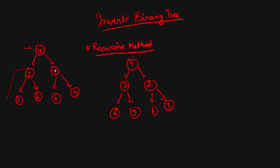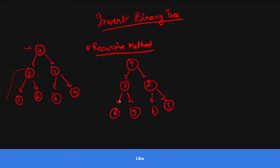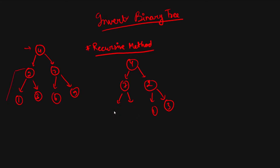After swapping the root's children, we recursively call for the left subtree. It swaps its children, then calls its own left and right. When a node is null it returns. Then we go to the right subtree of four, swap its children — it calls its left (both null, so swapped trivially) and its right (also null). This continues until all nodes are processed and the binary tree is fully inverted.